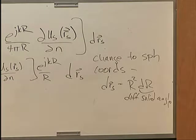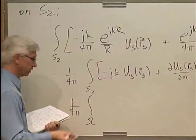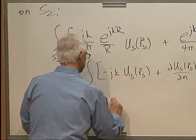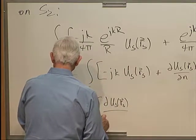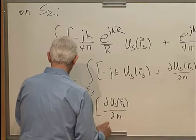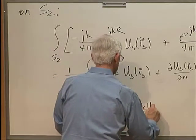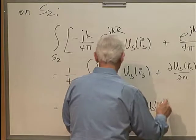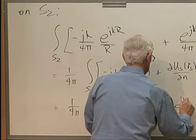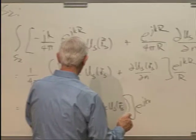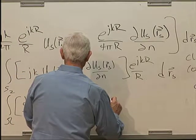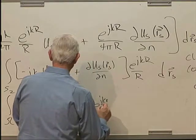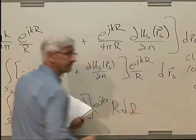Our expression becomes 1 over 4 pi times the solid angle subtended by the large partial sphere, partial with respect to US RS, surface normal minus jk US RS e to the jkR. With the R squared there, I have an R d omega.